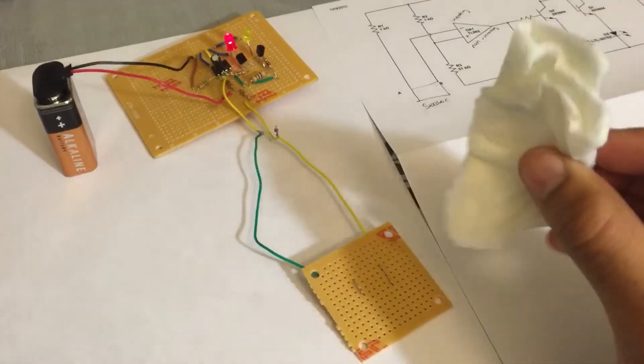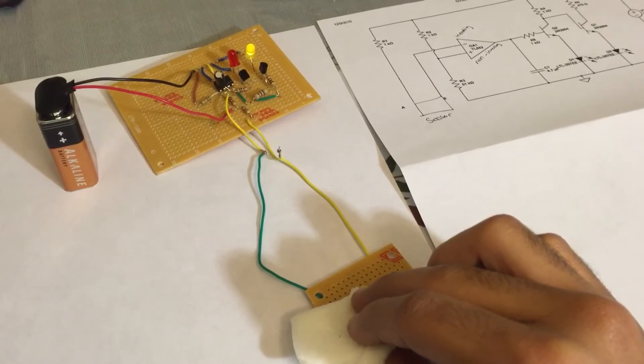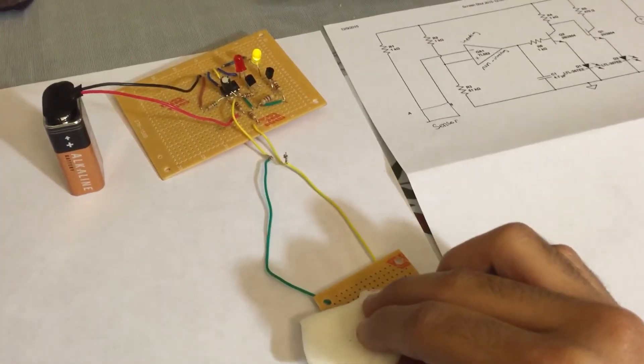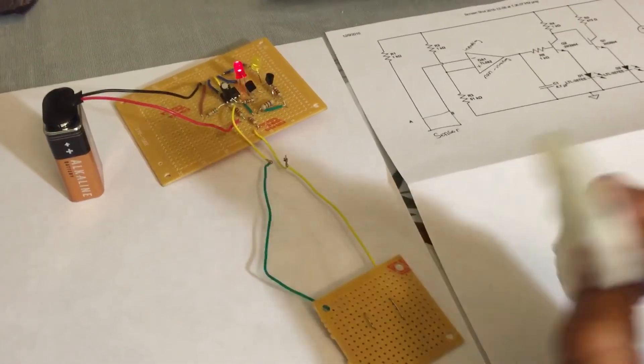When we put some cotton with water on it, you can see the green LED turn on. It goes back when it's dry, goes to green when it's moist. Thanks.